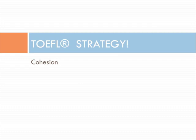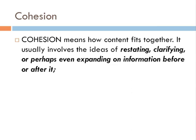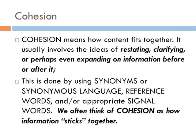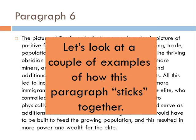The first thing we want to turn to is the idea of cohesion. This particular idea we've referenced throughout the entire video series, but now we're going to look at it a little more specifically. Cohesion is referring to the general idea of how information fits together. It often involves the ideas of restating information, clarifying, or perhaps even expanding on information before or after it. You can find examples of cohesion through uses of synonyms or synonymous language, reference words, and appropriate signal words. We often think of cohesion as how information sticks together.